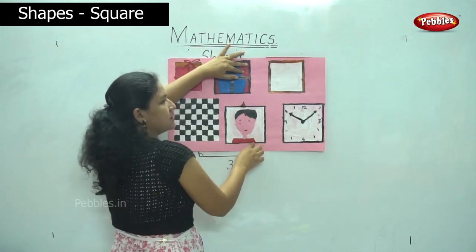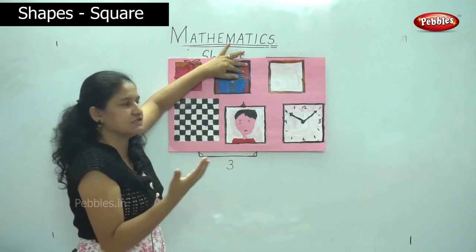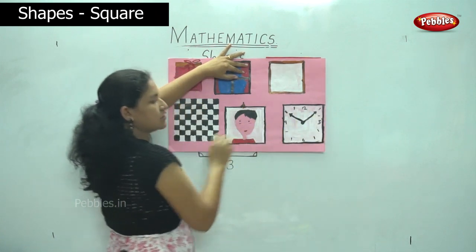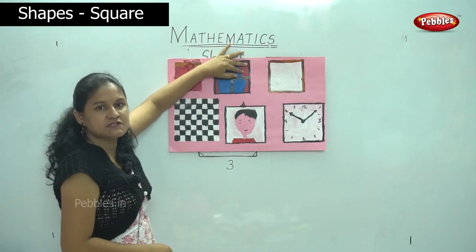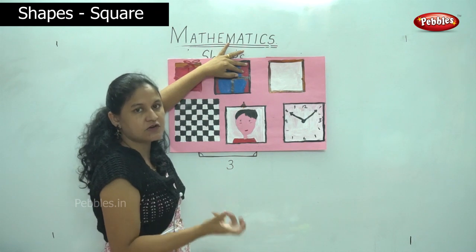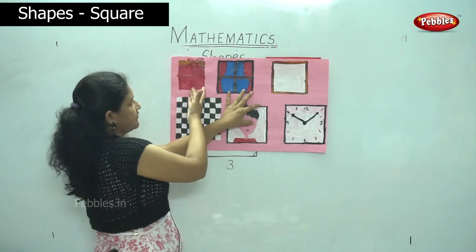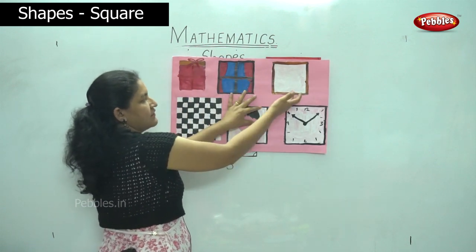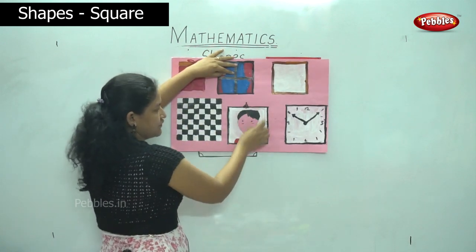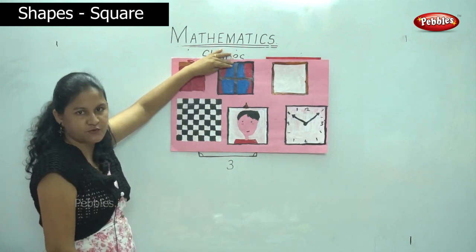Then we have the pictures in our house — the photo frame is in the shape of a square. We also have a clock in the shape of a square. There are different shapes of clocks, but we also have clocks that are square in shape. So we have: a gift box, a window, a slice of bread, a chess board, a photo frame, and a clock — these are all examples of squares.